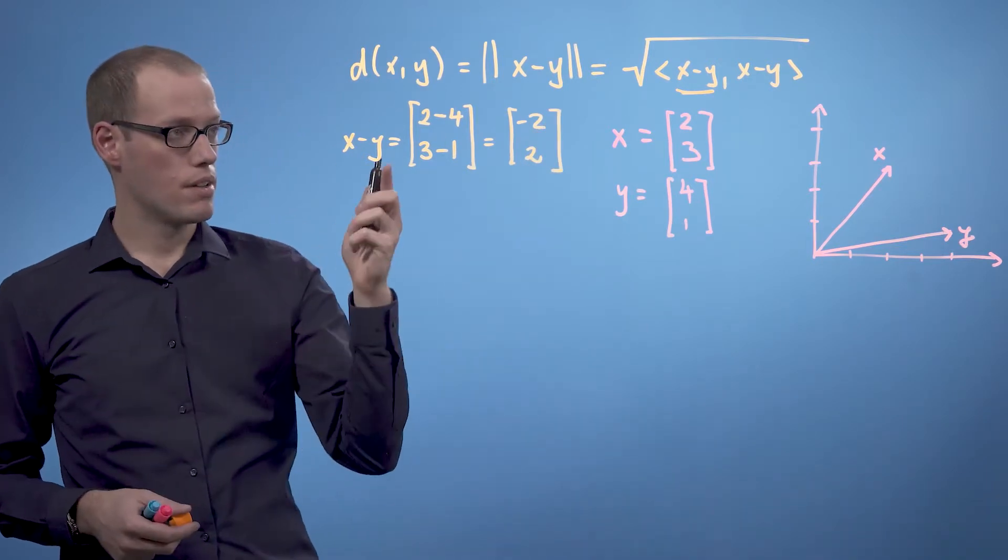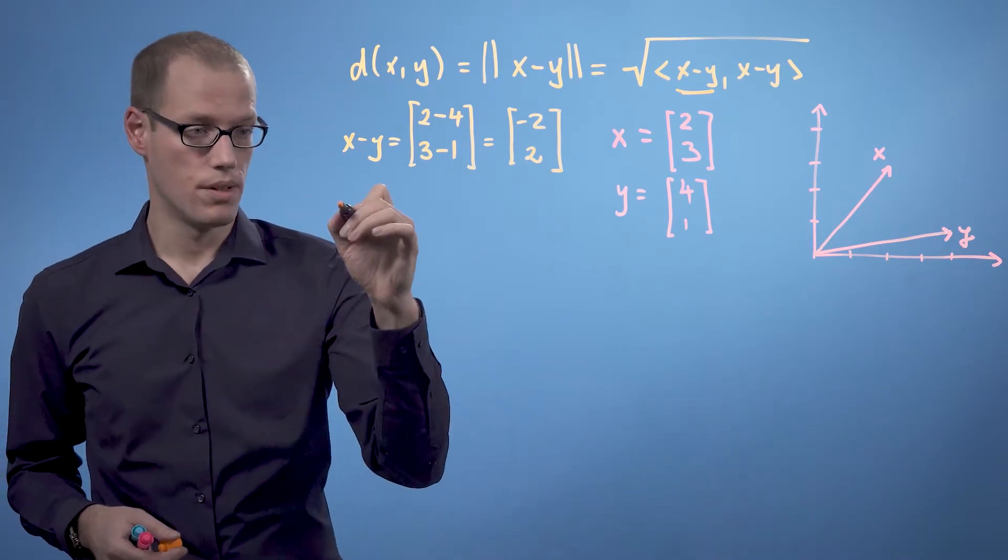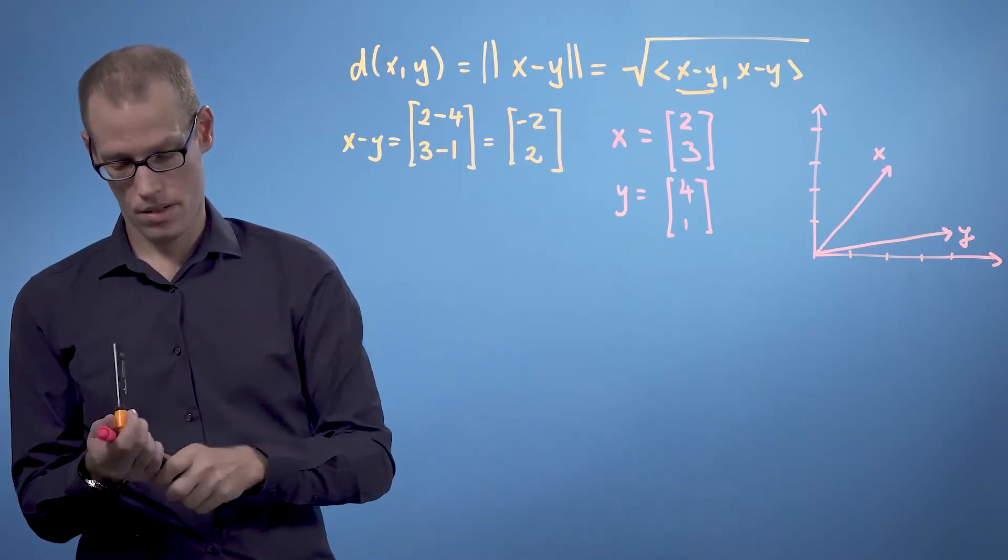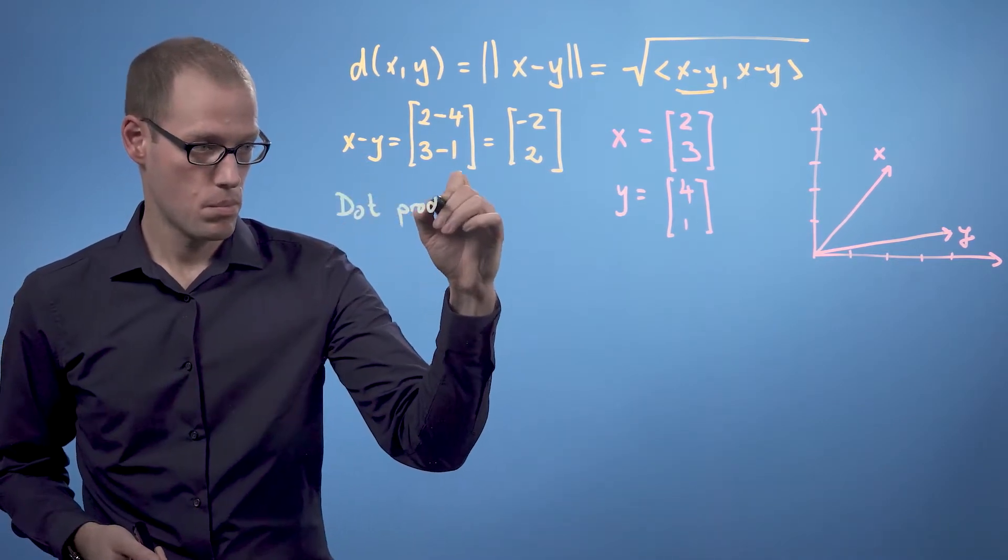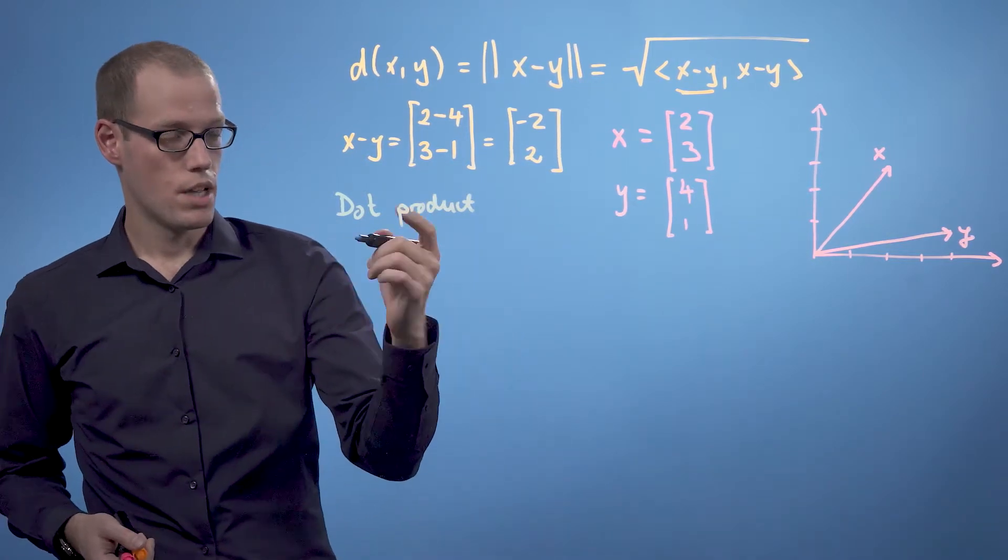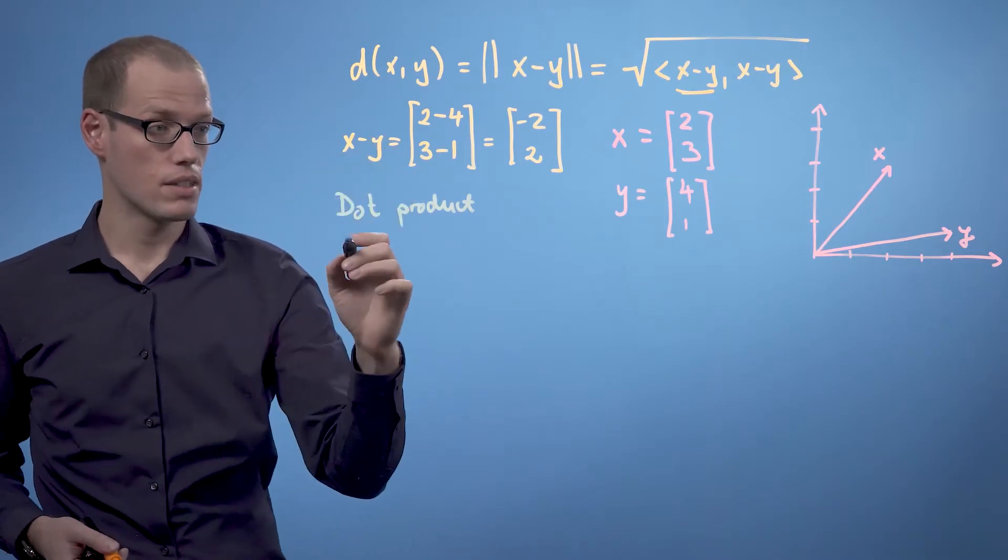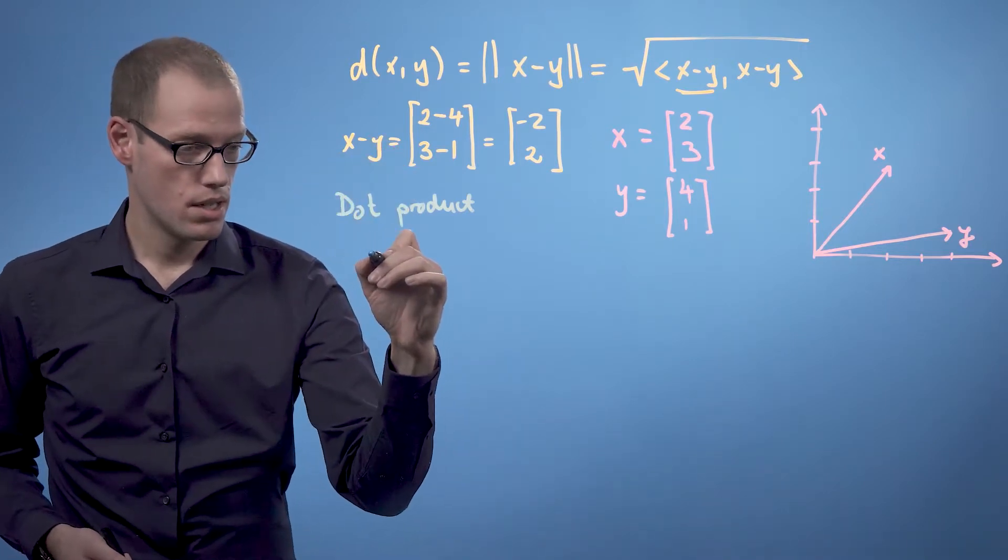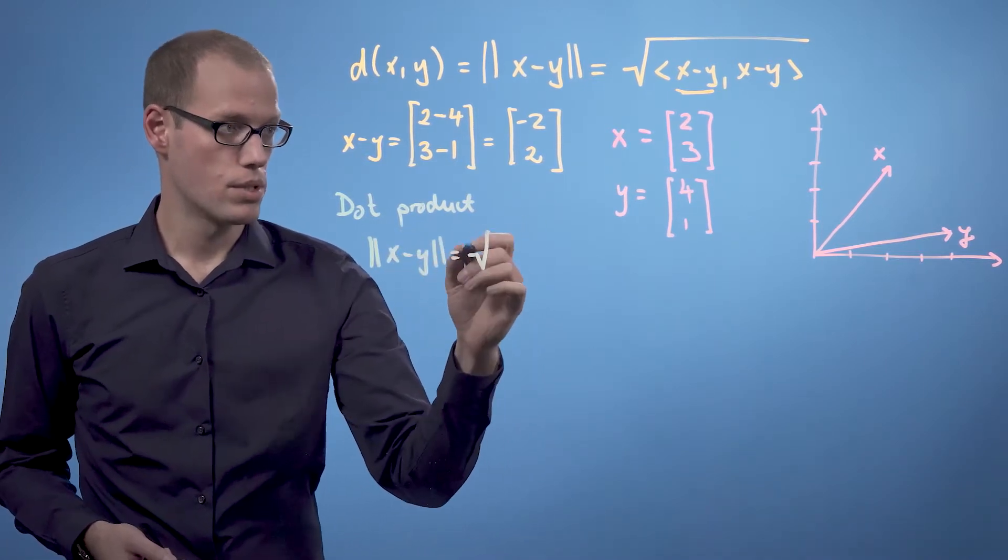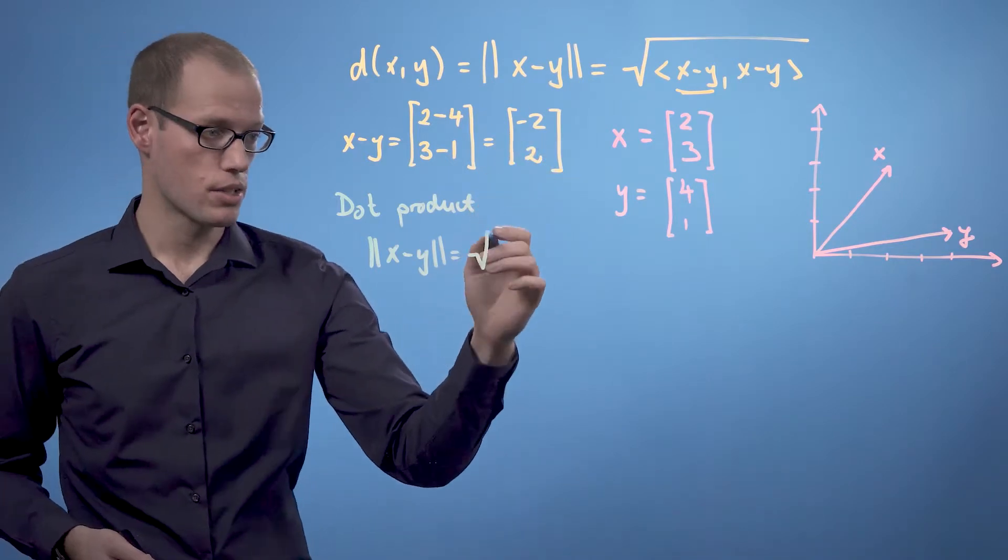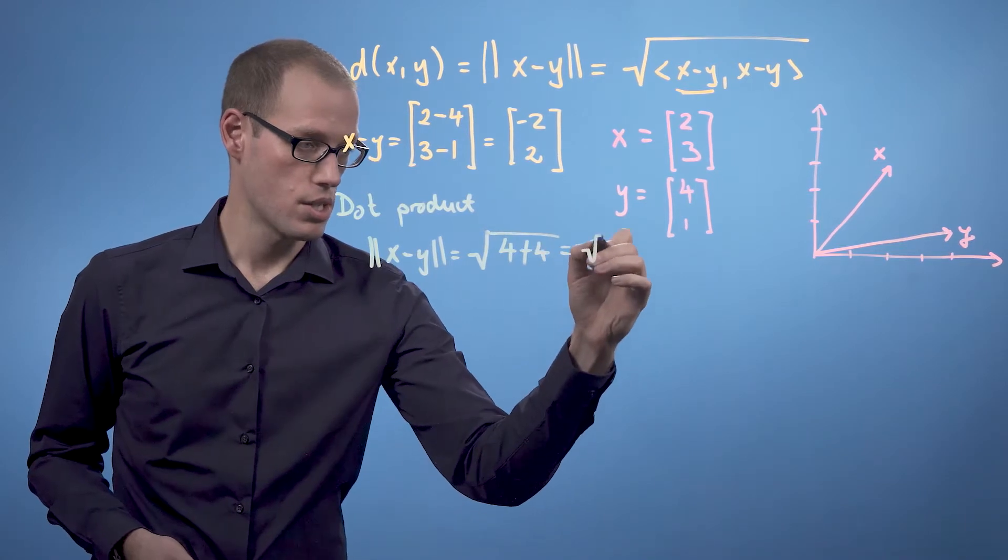Now we can define inner products. Let's use the dot product as our first example. If we use the dot product to compute the length of this difference vector, we get the square root of the first component squared plus the second component squared, which is 4 plus 4, and that's the square root of 8.